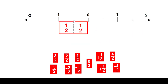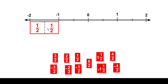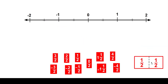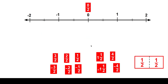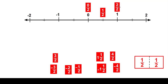Now each of the lines between the integers is divided into halves. So zero is zero halves — it's nothing. And this would be one half. If this is zero halves, this is one half, and this would be two halves. And the numerator and denominator are the same, so this number would be one.